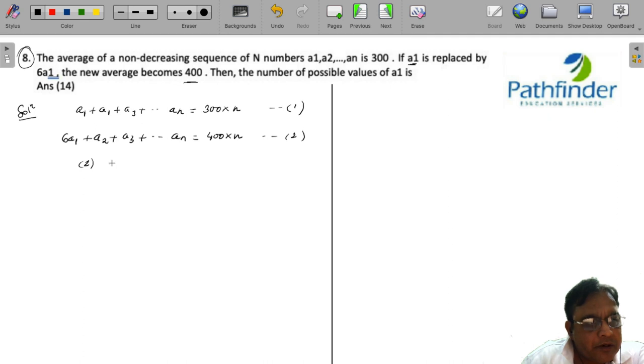Now if you subtract equation 1 from equation 2, on the left hand side you are left with 5 times a1, and on the right side you are left with n. So now you can have the value of n from 1 to any number.